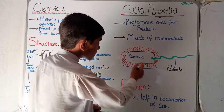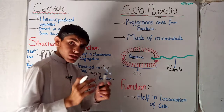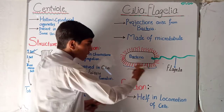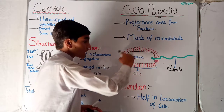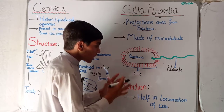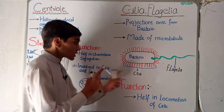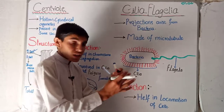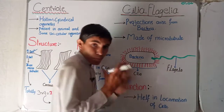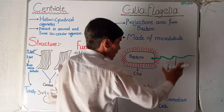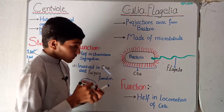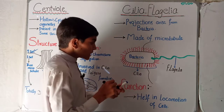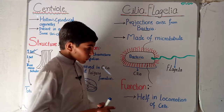Looking at the diagram, this is a bacterial cell. The bacterial cell contains both cilia and flagella. The longer green projection is the flagella, while the shorter projections present around the whole cell are called cilia. The main function of cilia and flagella is the locomotion of the cell — the movement of the cell. The flagella work like a propeller and help in the motion of the bacterial cell. In some bacteria, there are multiple flagella.